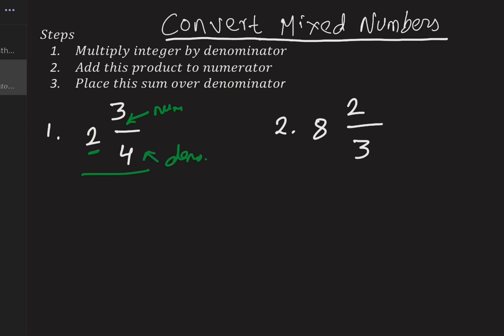The first step is we have to multiply integer by the denominator. Let's work with it. 2 is the integer and 4 is the denominator, so we have to multiply integer by the denominator. Step 1 is done.